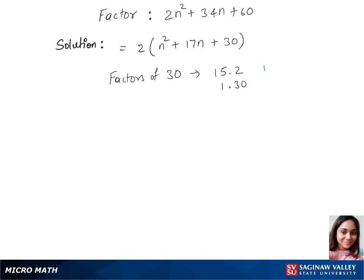We'll find the sum of each of these pairs. So that's 15 plus 2 is 17 and 1 plus 30 is 31. So the 17 here is matching up with our middle term's constant.